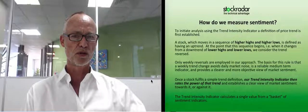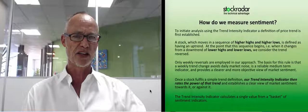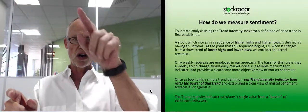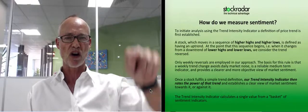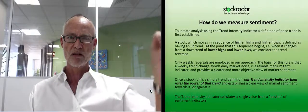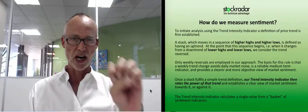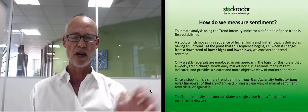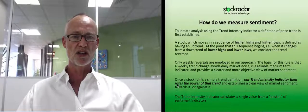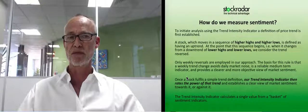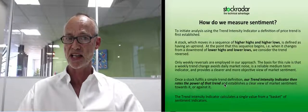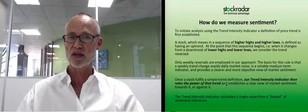So how do we measure sentiment? To initiate analysis using the Trend Intensity Indicator, a definition of price trend is first established. When a stock goes from lower lows and lower highs, and reverses to higher highs and higher lows, that's what we consider a trend change. Only weekly reversals are used in my format — I don't use daily data, I find that too noisy. The weekly gives me a far clearer picture of market sentiment. Once a stock fulfills that trend definition, the Trend Intensity Indicator then rates the power of that trend and establishes a clear view of market sentiment towards or against it.